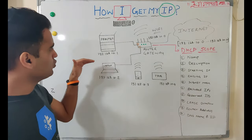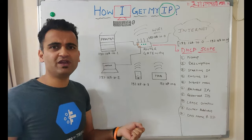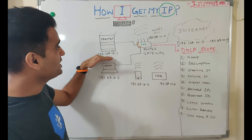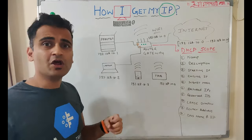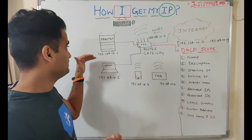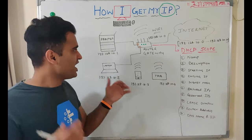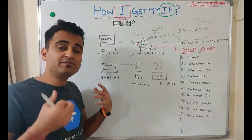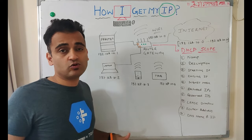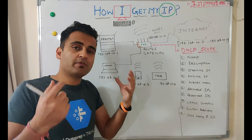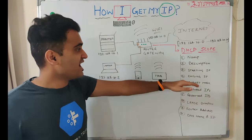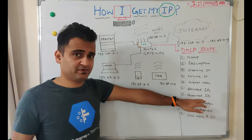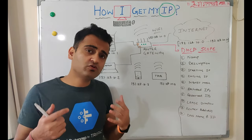Excluded IPs are those IP addresses you do not want the DHCP server to assign to any device. For example, if you have a dedicated printer that always needs to be on the network, you can tell the DHCP scope to exclude 192.168.10.1 so that printer always retains that IP. Similarly, the DHCP server itself must always have a dedicated IP, so its address would also be listed in the excluded IPs.